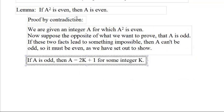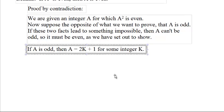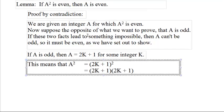Okay. If, now so we're supposing that a squared is even, but a is odd. Well, if a is odd, then a is two times some integer plus one. And a squared will be that thing squared.